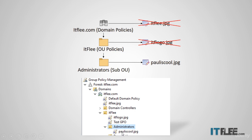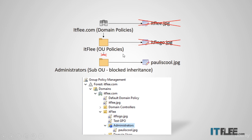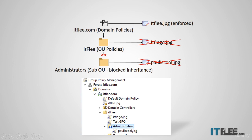If we block inheritance, itflea.jpg at the domain and ITF logo at the OU will not apply, but pauliscool.jpg still applies. Nothing really changes except that test GPO and default domain policy no longer apply to the administrators OU. However, if we enforce itflea.jpg — you can see the locked icon indicating enforcement, versus the exclamation mark icon for blocked inheritance — itflea.jpg will take precedence because it is an enforced GPO, and enforced always wins over local, site, domain, and OU.